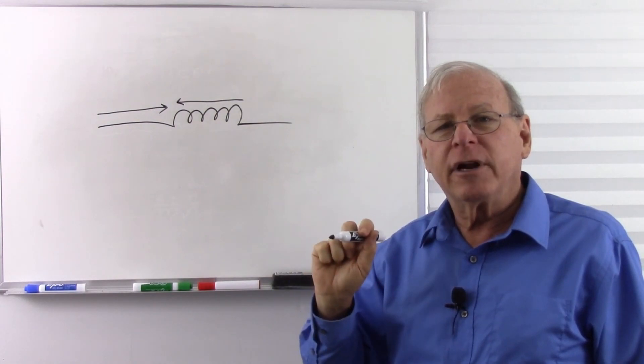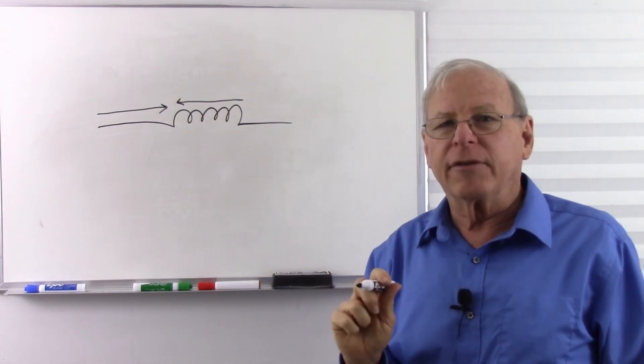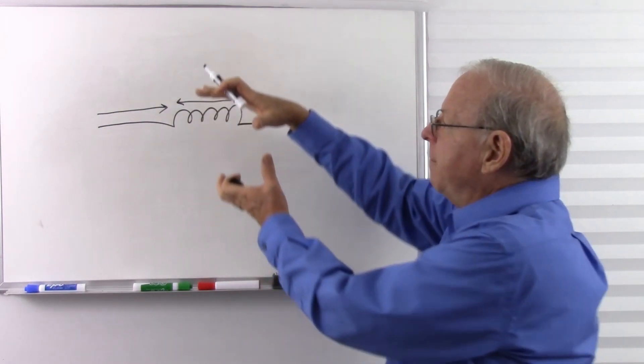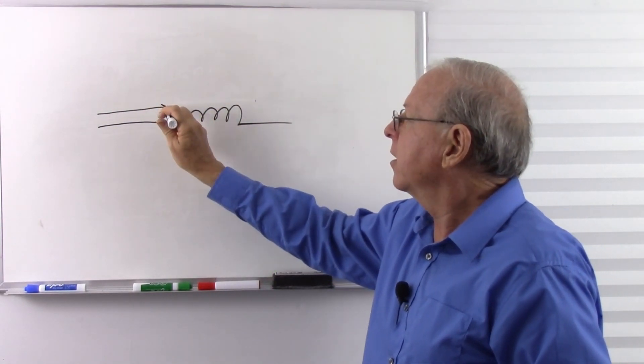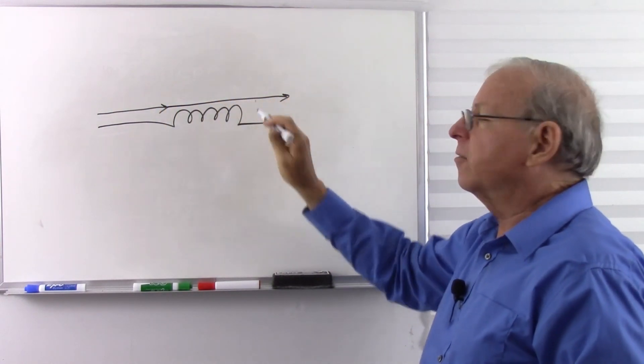So when I try to push a current into an inductor, the inductor says no you're not either. But after a while that magnetic field stops moving, and when it stops moving it no longer interacts with the current, and so the current just goes right through.